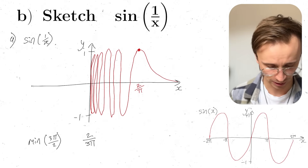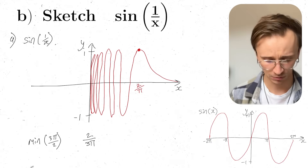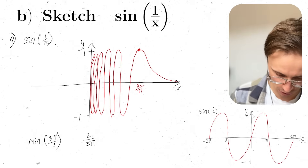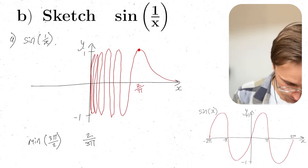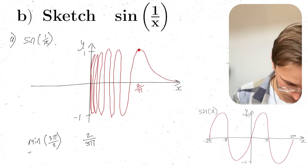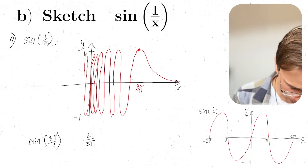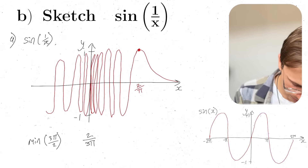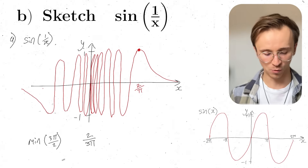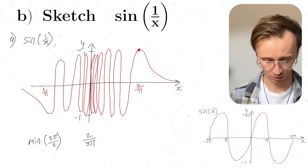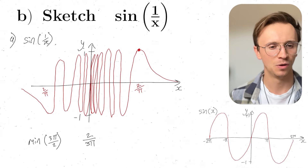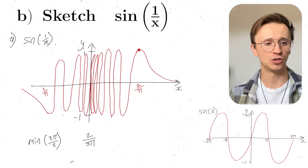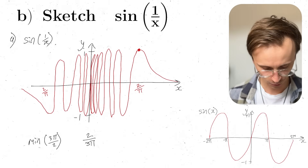I also know that sin(1/x) is still an odd function, so the opposite happens in the negative region. We had a maximum at 2/π, so we'll have a minimum at minus 2/π, and the same thing will happen — it will go down to zero there, and we get oscillations that go up and down, more and more erratic the closer you get to zero. It's quite an interesting graph, because all those oscillations that were between zero and infinity are now squished to be between zero and 2/π. Okay, that's part B done.